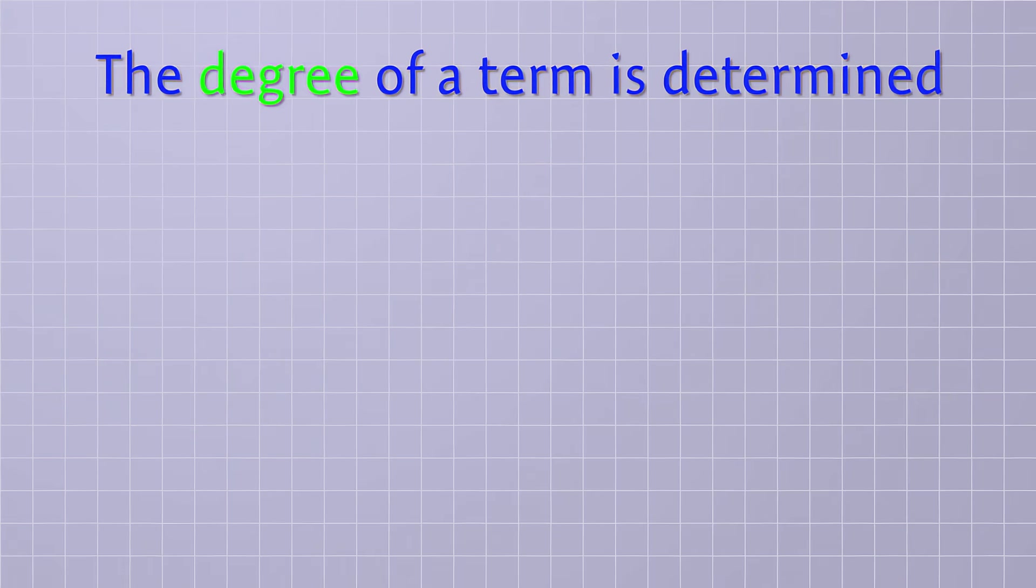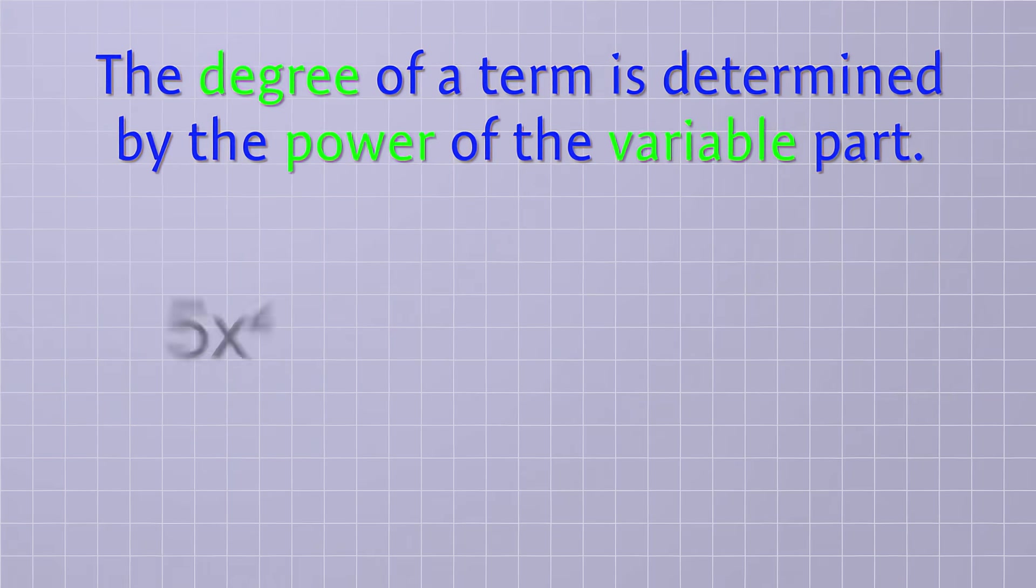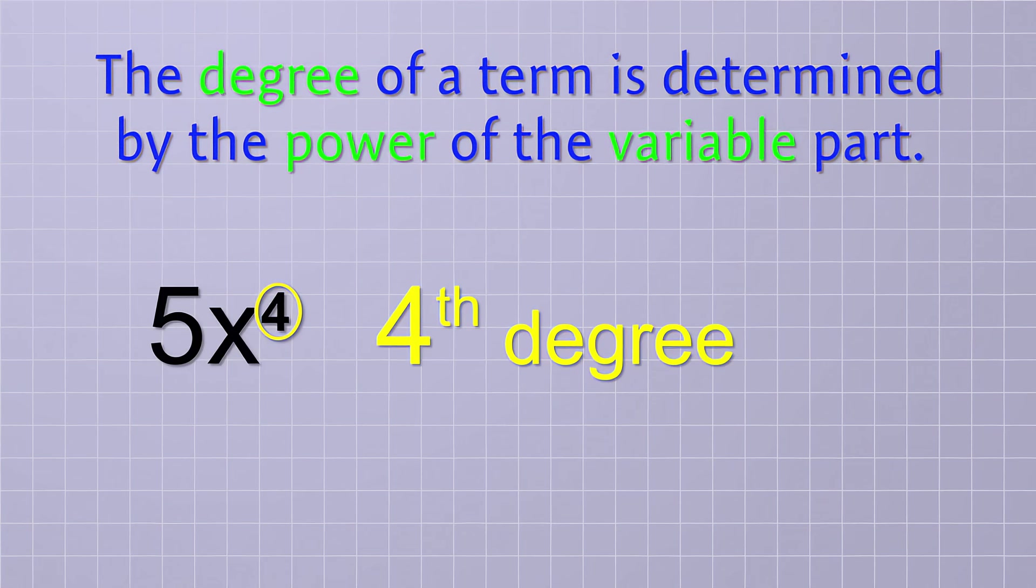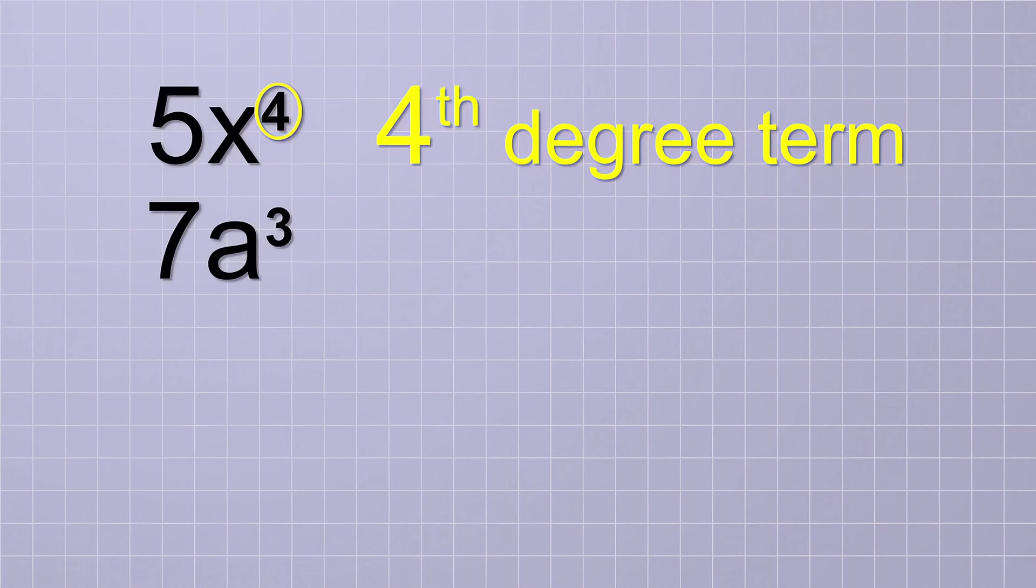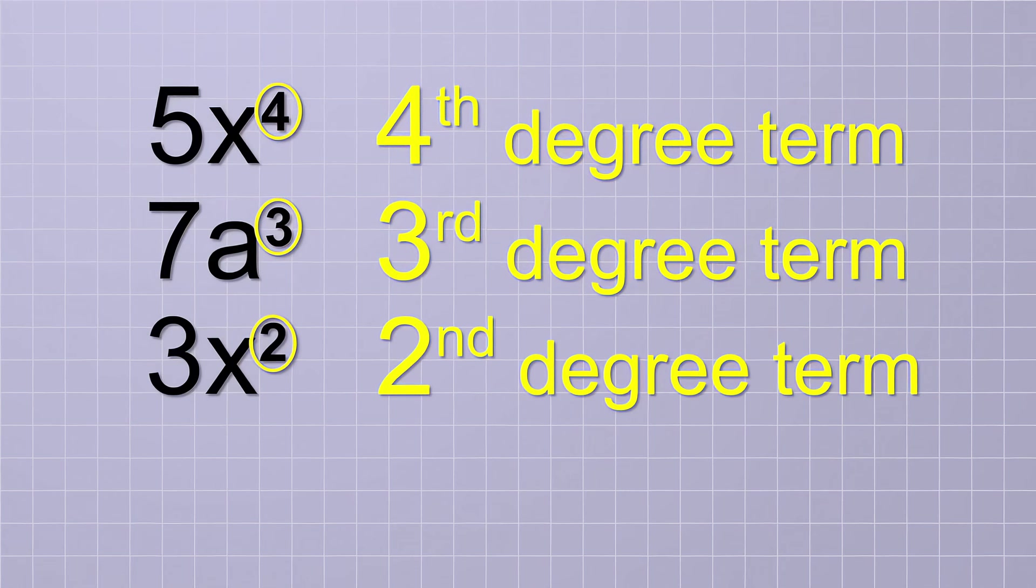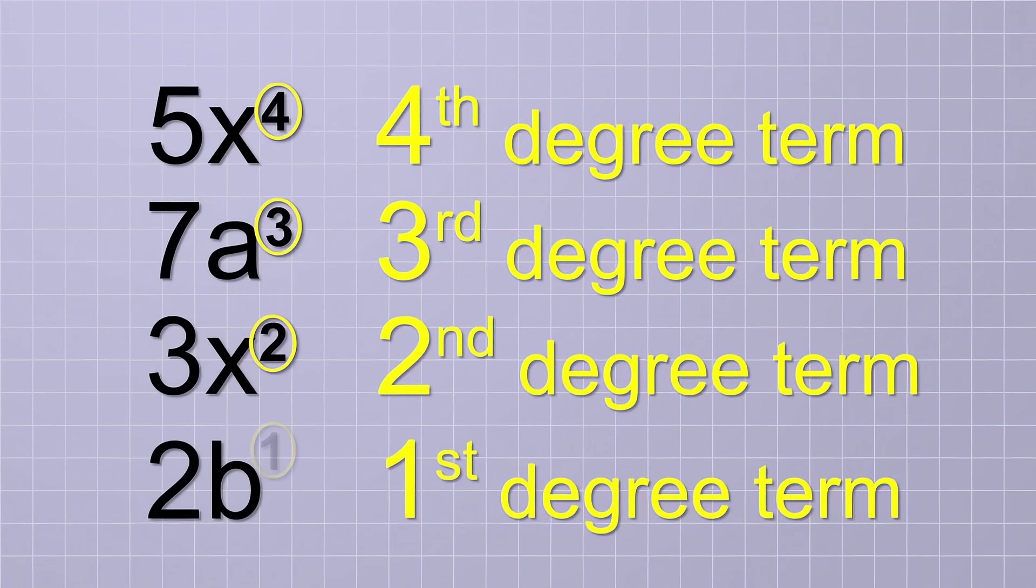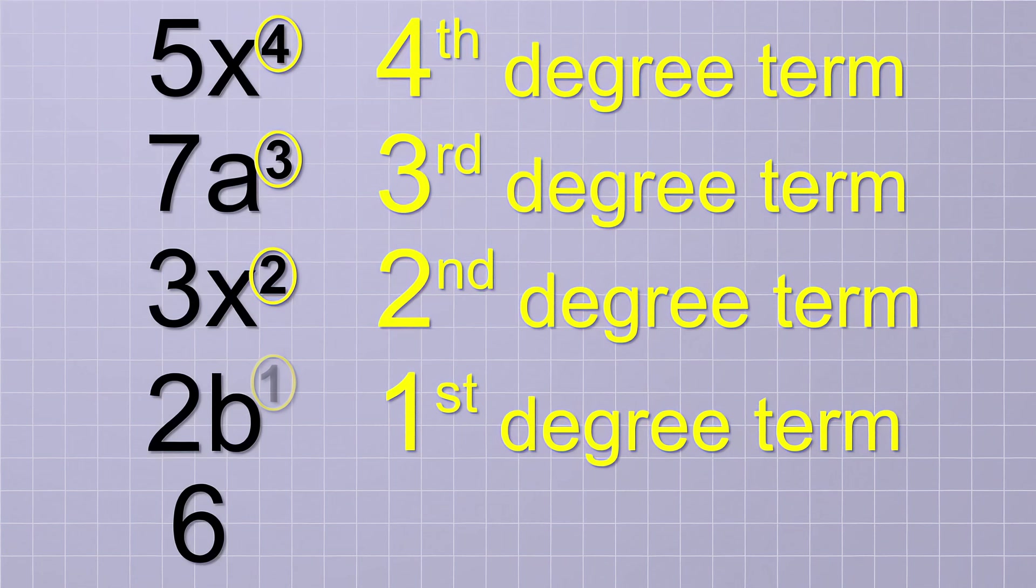The degree of a term is determined by the power of the variable part. For example, in this term, since the power of the variable is 4, we say that the degree of the term is 4, or that it's a 4th degree term. And in this term, the power of the variable is 3, so it's a 3rd degree term. Likewise, this would be a 2nd degree term, and this would be a 1st degree term. Oh, and I suppose you could call a term with no variable part a 0 degree term, but it's usually just referred to as a constant term.